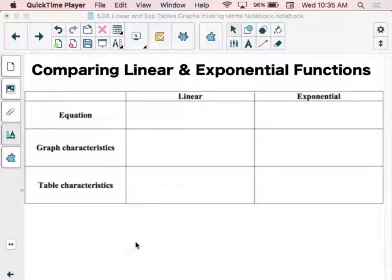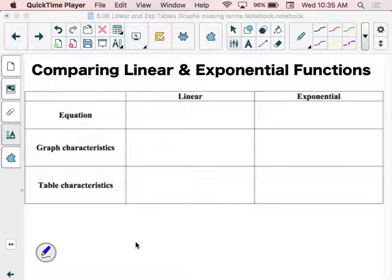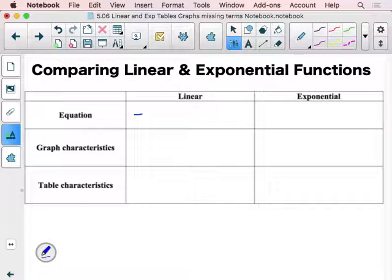So if I go quick you can always back up a little bit. Now when it comes to comparing equations, graph characteristics and table characteristics for linear versus exponential functions, know that your linear functions are going to have that f(x) = mx + b where you have your rate of change that is based on either addition or subtraction, and then you're going to have an exponential.